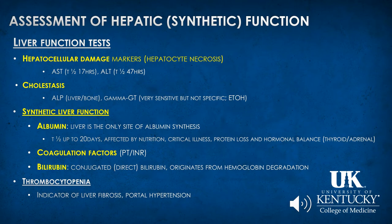Thrombocytopenia can also represent liver disease as a form of portal hypertension and as an indicator for increased resistance in the hepatic circulation, because splenic blood flow and platelet uptake increase when there is shunting toward the splenic organs.